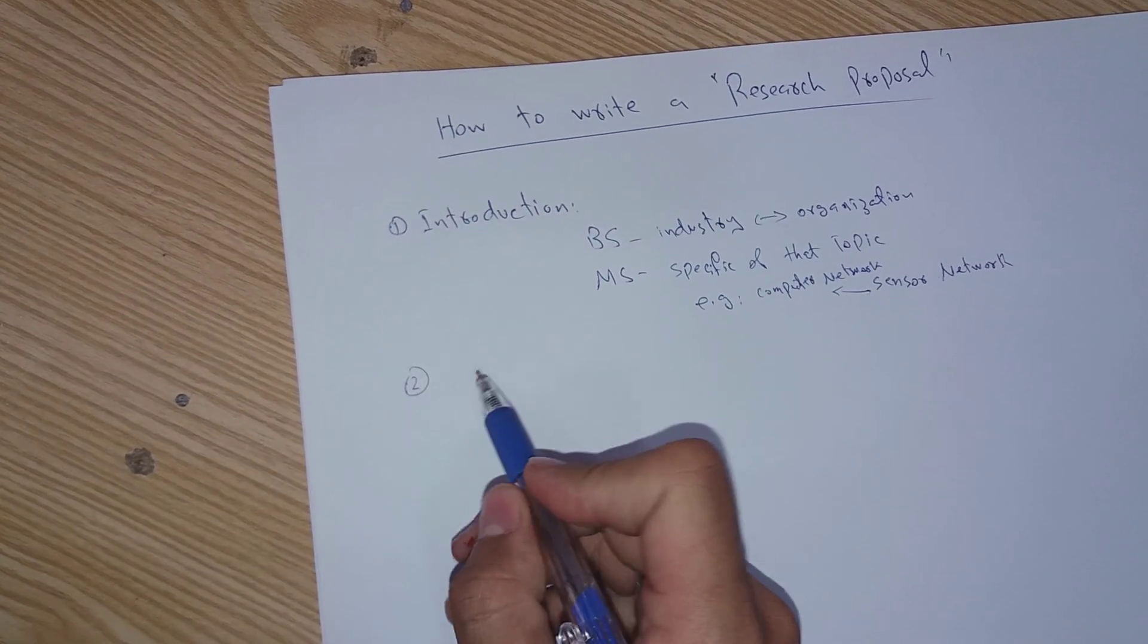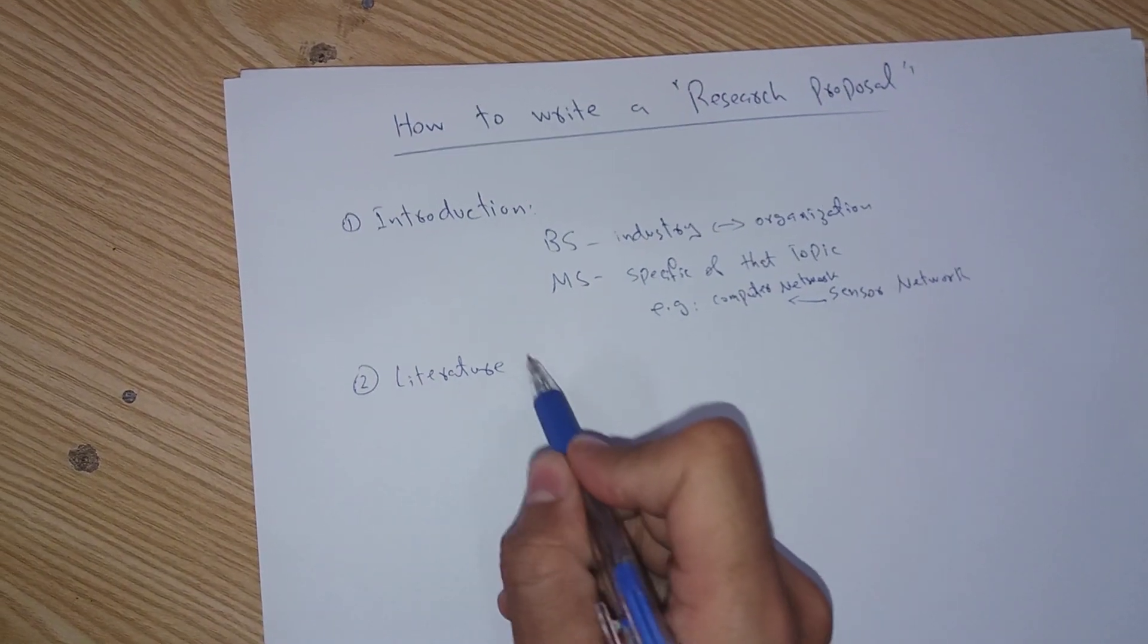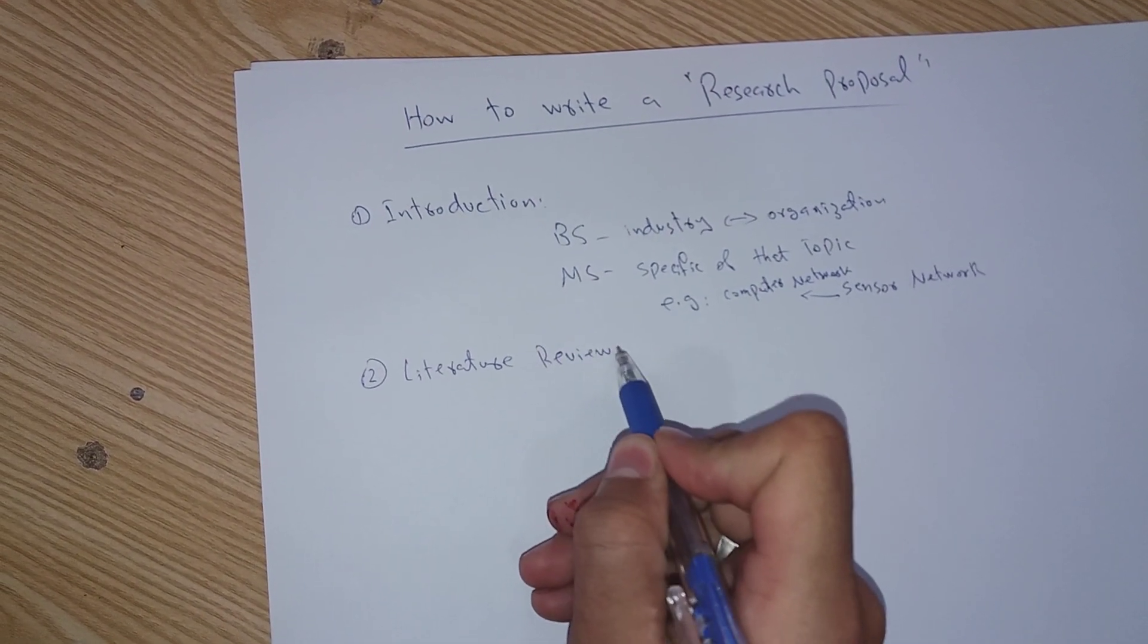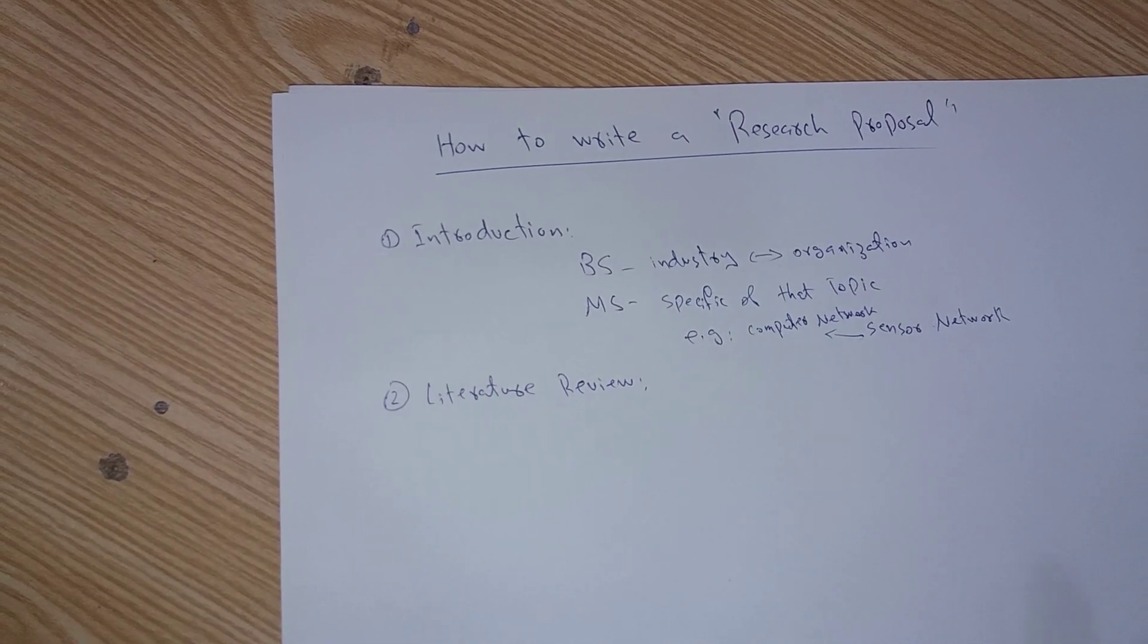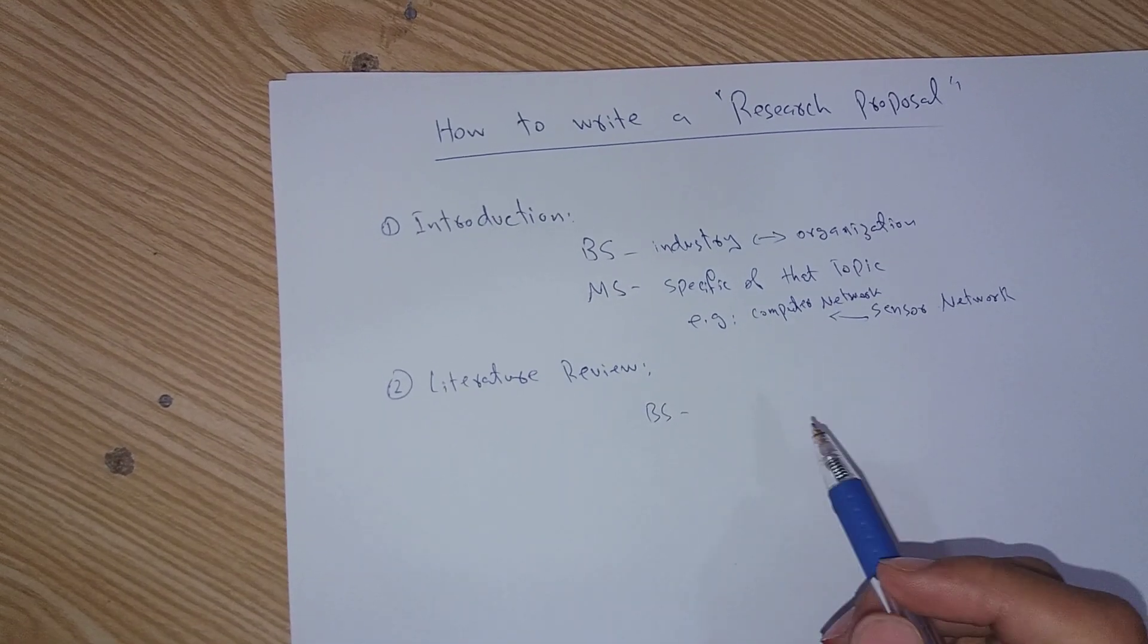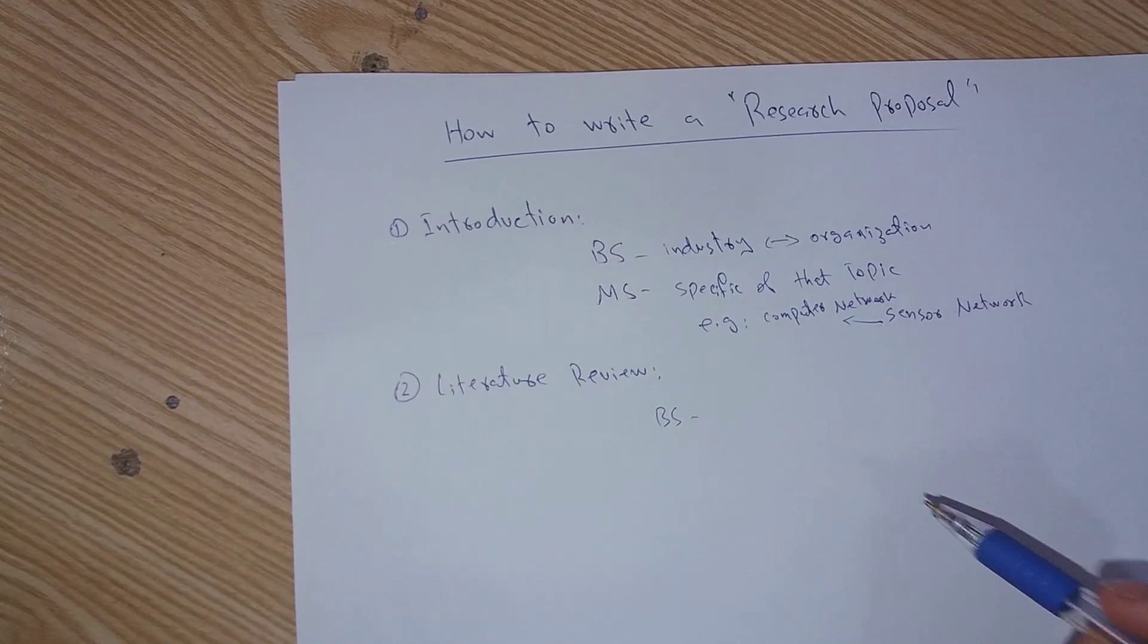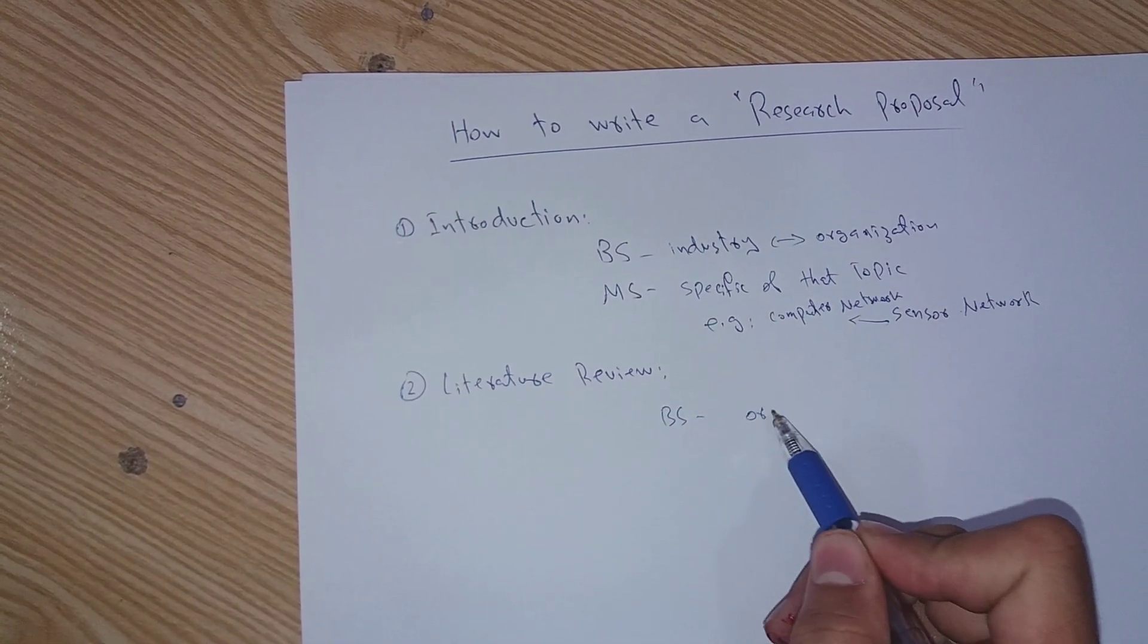Now the second step is literature review. Literature review means that you have studied the survey, you have studied the literature and you have surveyed each and everything. So for BS level, as I said, if you are writing a proposal for a hospital, you have to write about that organization.